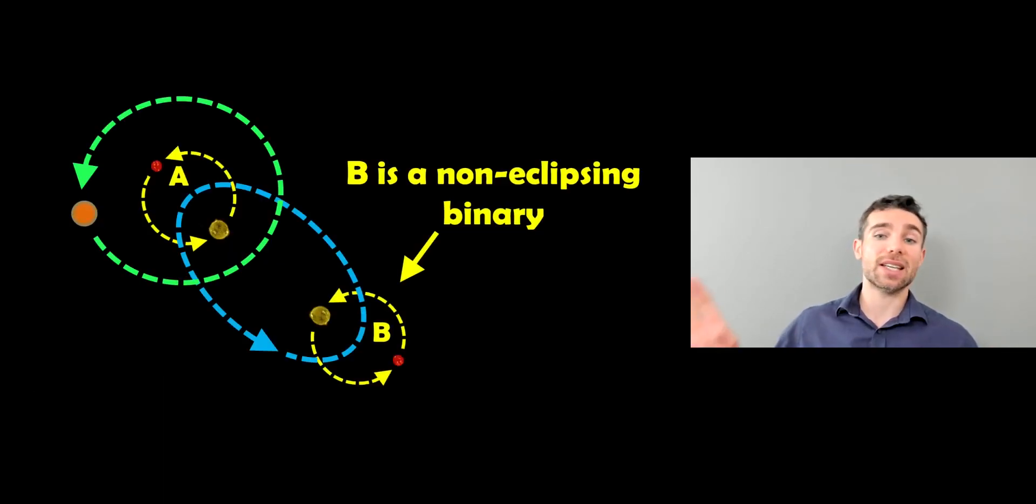Now, B is a non-eclipsing binary star system. So again, you've got two stars there. They are orbiting a common center of mass in this binary system. So you've got A and B. Only one of those is an eclipsing binary system.